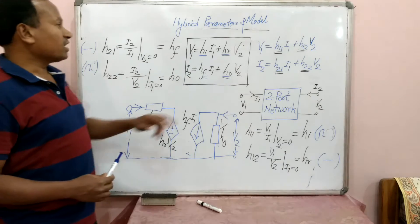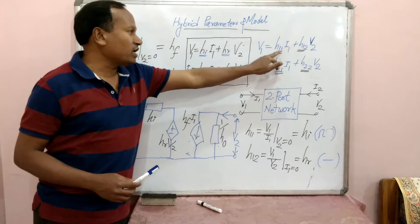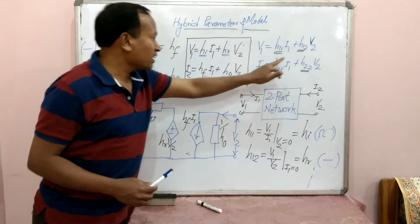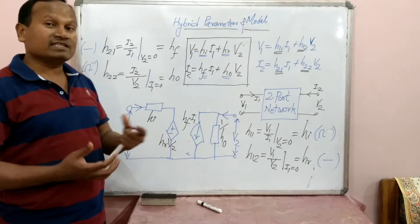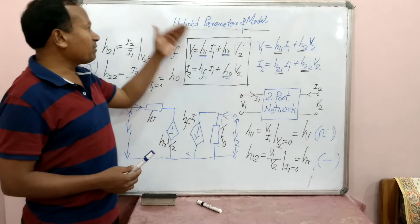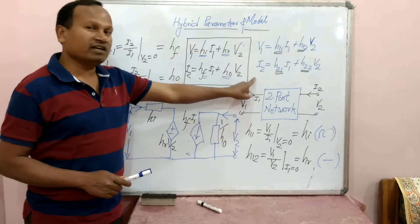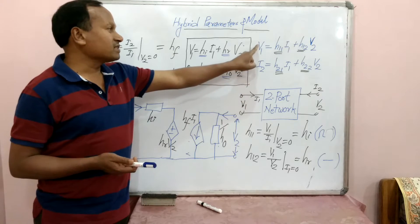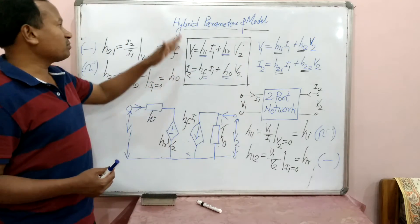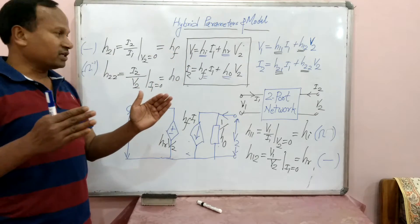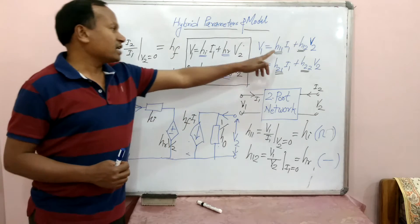H stands for hybrid parameters. The two standard equations which describe the hybrid parameters are: V1 = H11·I1 + H12·V2, and I2 = H21·I1 + H22·V2. To remember these: Z parameter equations are written in terms of V1 and V2; Y parameter equations are written in terms of I1 and I2. When we combine them — using input voltage and output current — this becomes hybrid parameters.